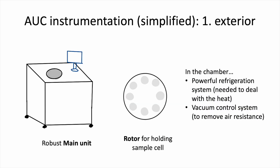Now let's focus specifically on the instrumentation of AUC. Let's first look at the exterior of AUC. It's a fairly large and robust machine — it has to be robust because it needs to safely contain a rotor that is spinning at extremely high speed. And then inside the chamber, you will see a rotor. This AUC rotor has specific slots, and these specific slots are designed to hold special analytical sample cells.